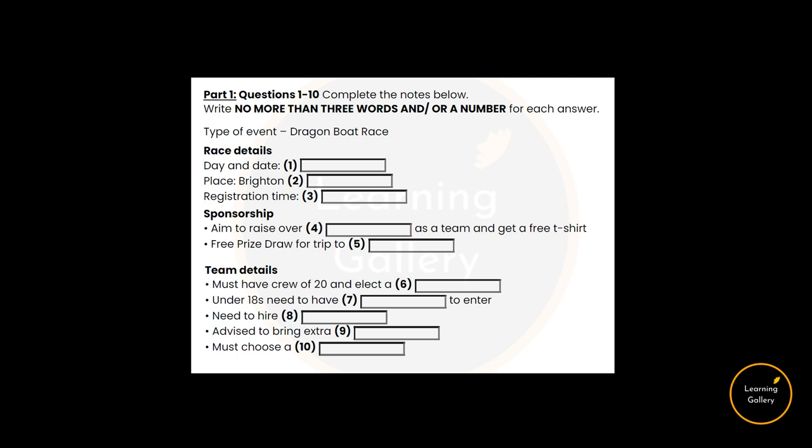Section 1. A man wants to find out about taking part in a dragon boat race. Listen to the conversation between the man and the woman and answer the questions. First, you have some time to look at questions 1 to 5. Now we shall begin. You should answer the questions as you listen because you will not hear the recording a second time.